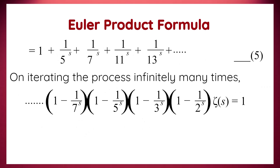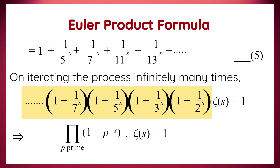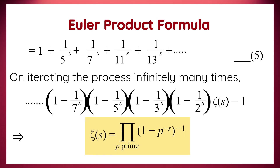Hence, if we iterate this process infinitely many times, we get an expression: a product of terms, each involving prime numbers raised to the power s, where each term subtracts the reciprocal of that prime's power from 1, multiplied by zeta(s), equals 1. The product of these terms is the product over all primes p of 1 minus p to the power minus s. Sending this product to the right-hand side, we finally derive the Euler product formula.